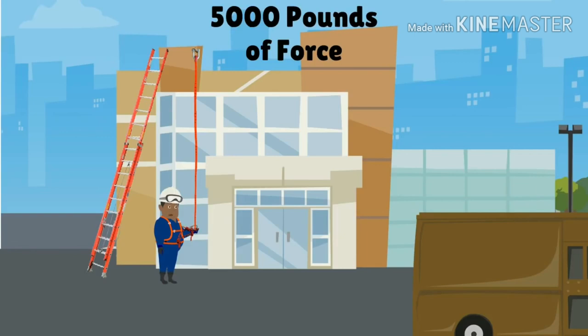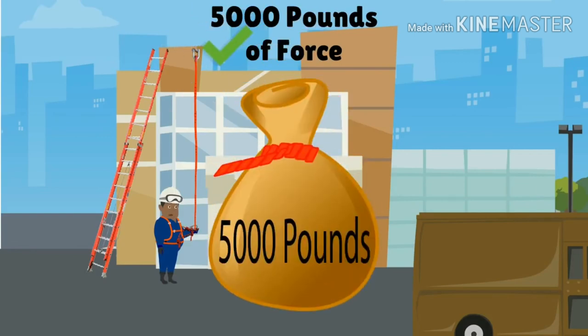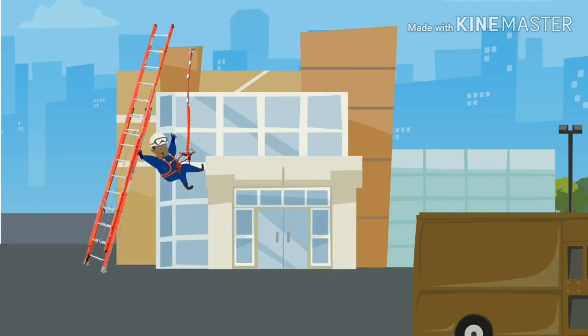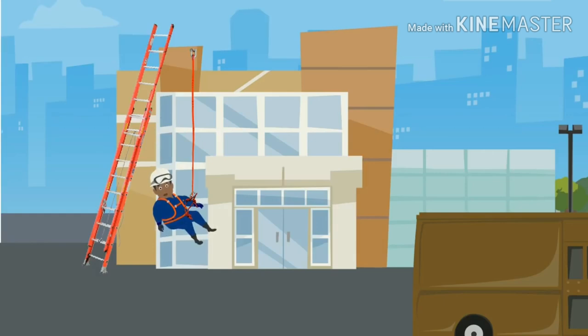The anchorage point must be able to withstand 5,000 pounds of force. If the wearer loses their balance and falls, the lifeline prevents them from falling all the way to the ground.